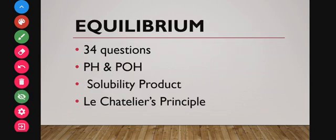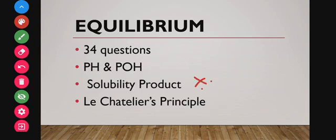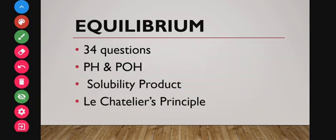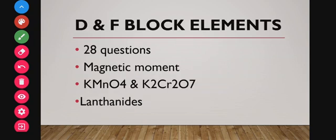The next topic is equilibrium. Around 34 questions were asked from equilibrium by analyzing the past 10-year question papers. In equilibrium, you have to know both the calculation of pH and pOH, what they are and how they are calculated, then solubility product, and Le Chatelier's principle. The solubility product and calculation of pH are really very important.